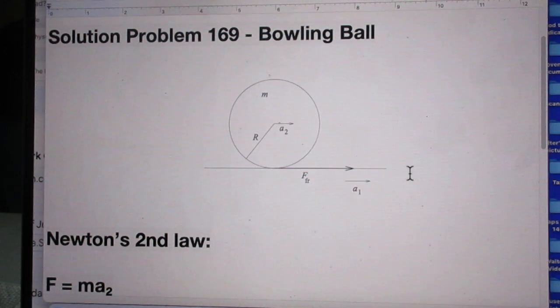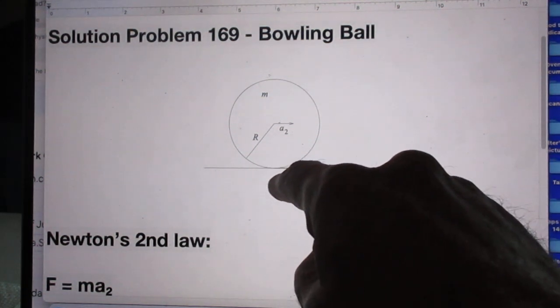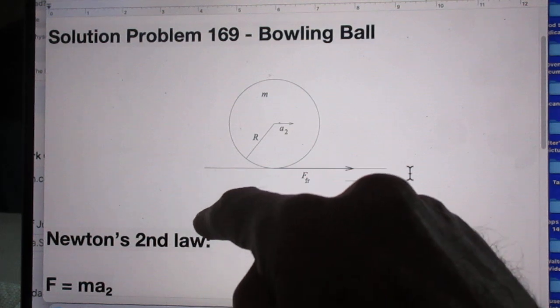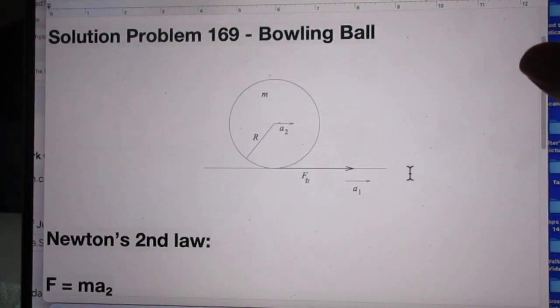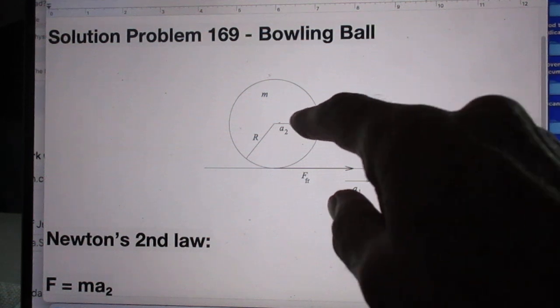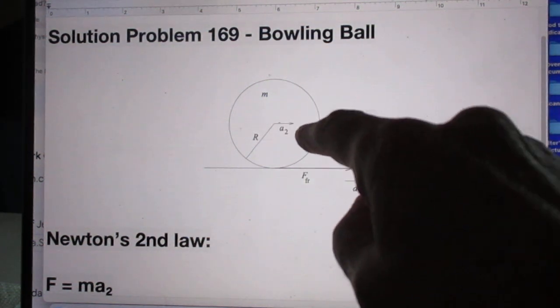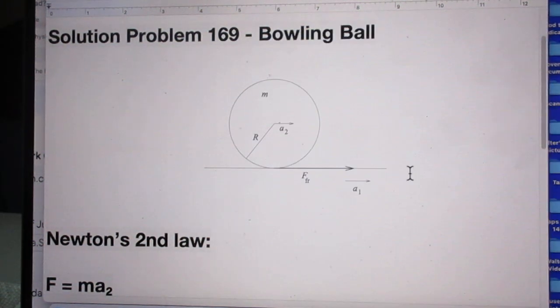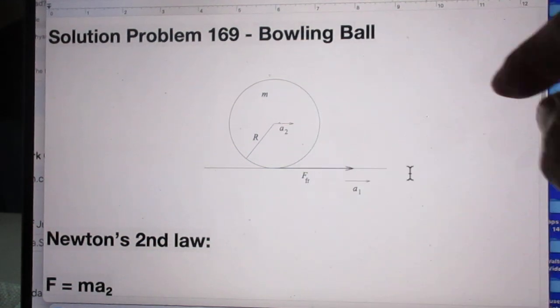The reason why the ball will start to move to the right is because there must be friction here. And due to the friction, two things will happen. It will start to move to the right, but it will also start to rotate, because there is a torque relative to this point.